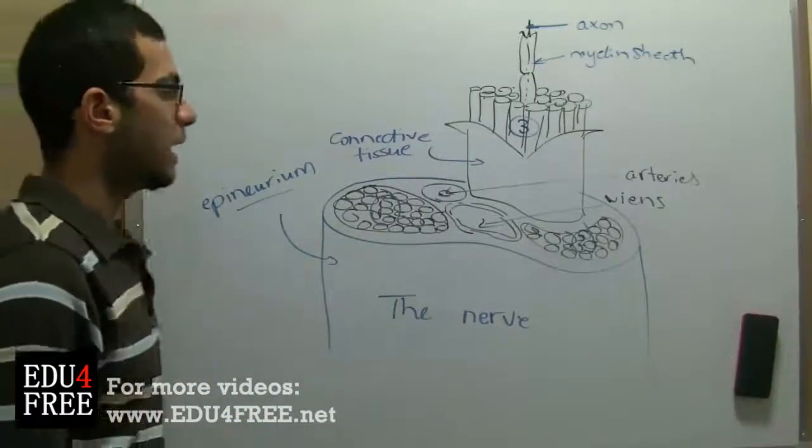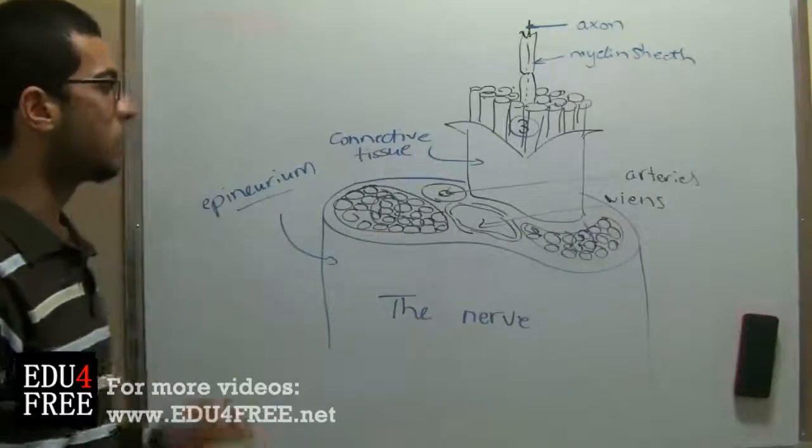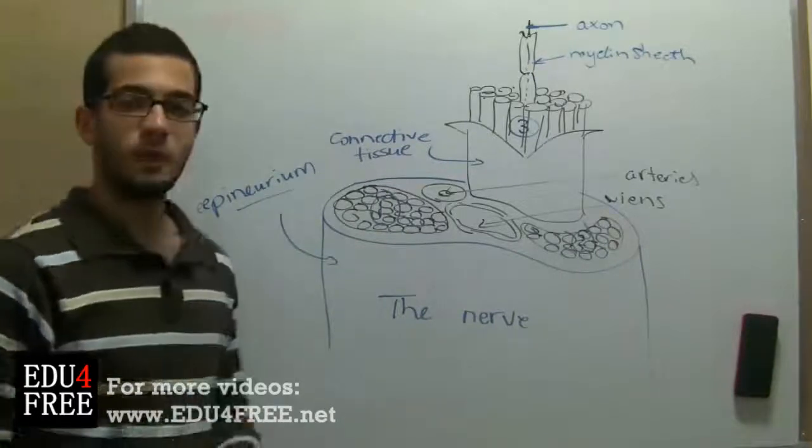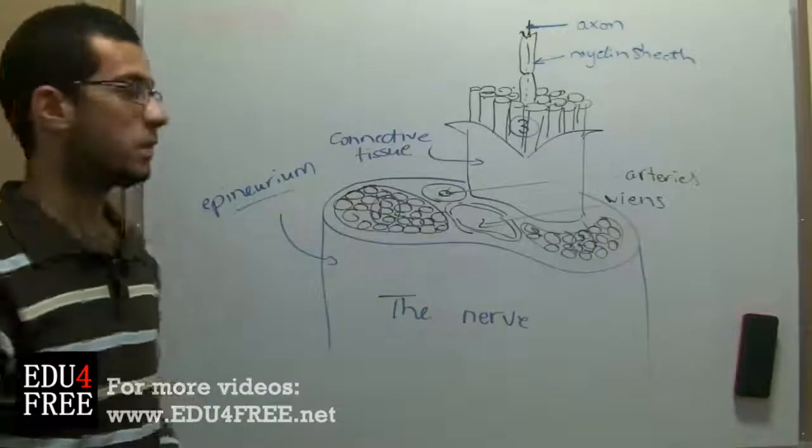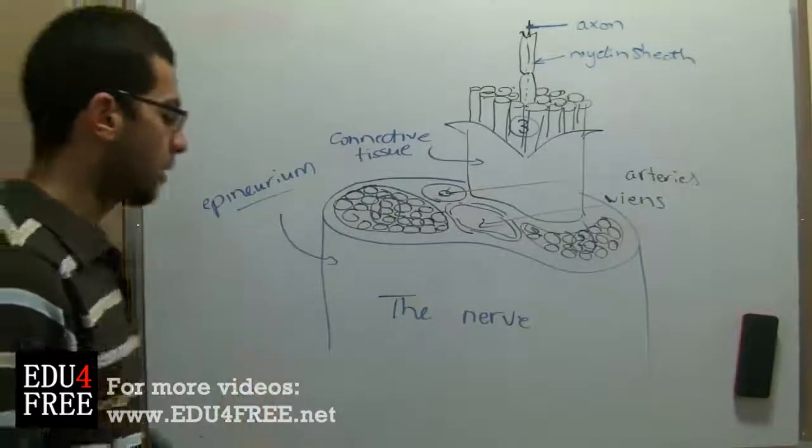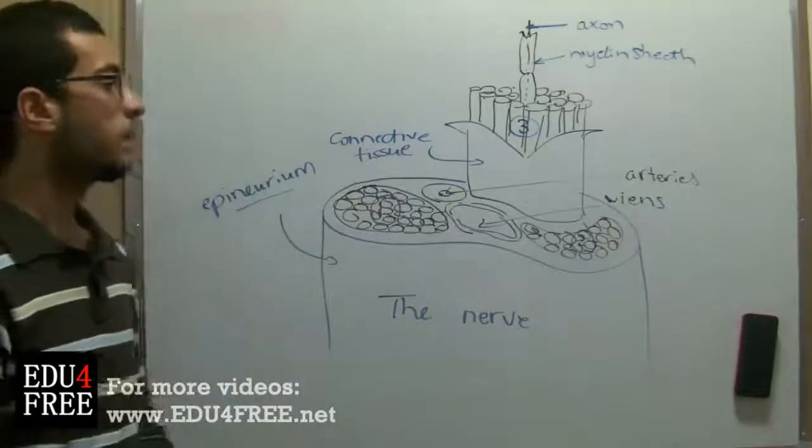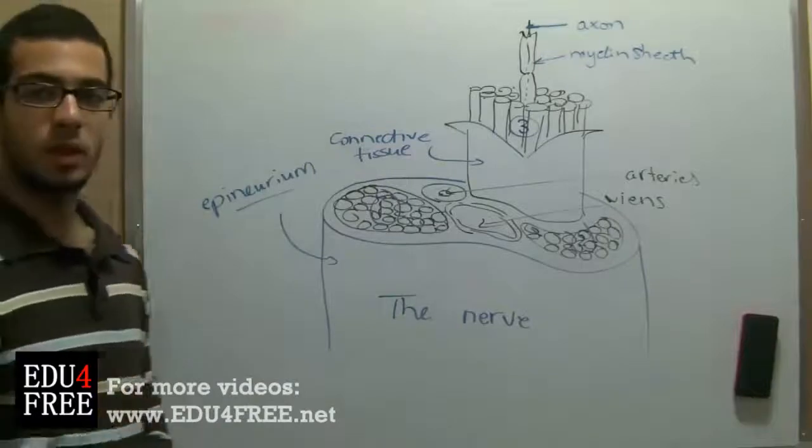So this is it for today, and the next time we will talk about the nerve impulse itself. What's the nerve impulse, and how does it travel through the axon of one neuron to another? And until then, I thank you for watching, and see you.